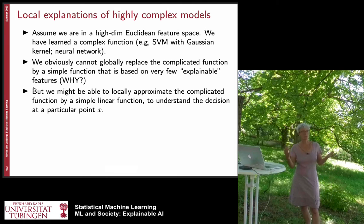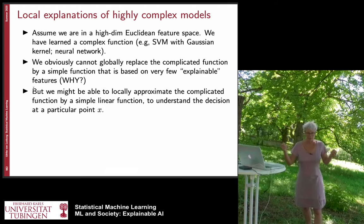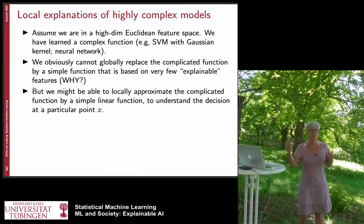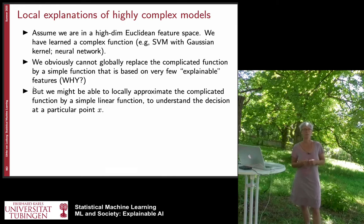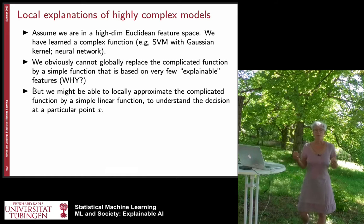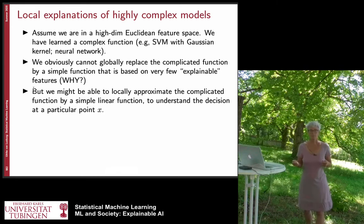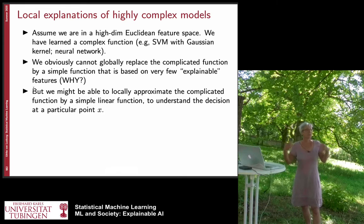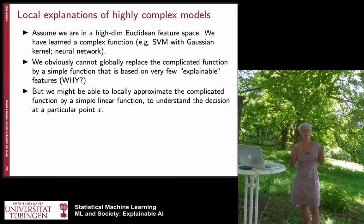Of course, globally this is not possible, because if we could achieve the same result with a linear function, we wouldn't need to use a deep neural network in the first place. Typically in cases where we use these networks, a simple linear function or decision tree wouldn't do the job. So we cannot simply replace this complicated function with something simple that we can explain — at least not on a global scale.